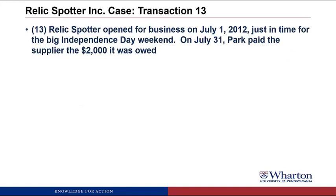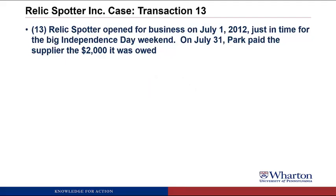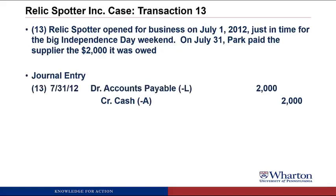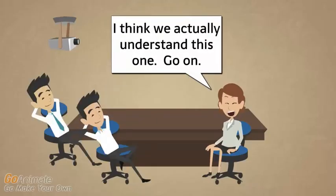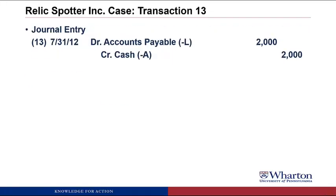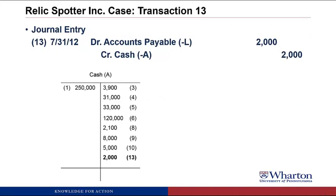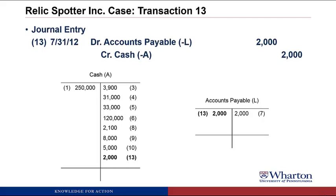Transaction 13. RelicSpotter opened for business on July 1, 2012, just in time for the big Independence Day weekend. On July 31st, Park paid the supplier the $2,000 it was owed. We credit cash $2,000. The debit is that we're paying what we owe the supplier — accounts payable, which is a liability. The liability is going to go down, and we make liabilities go down through a debit. So we debit accounts payable for $2,000. Notice the balance in accounts payable is now zero — we've fully paid off the liability.